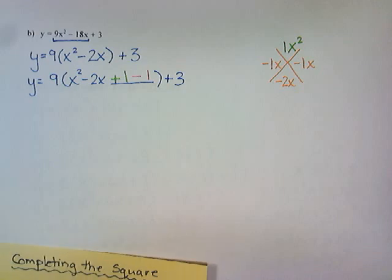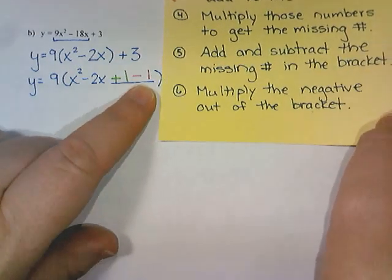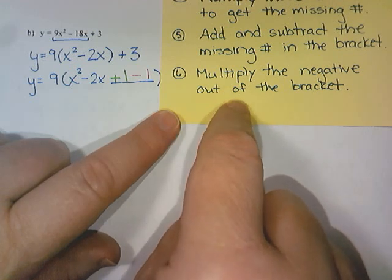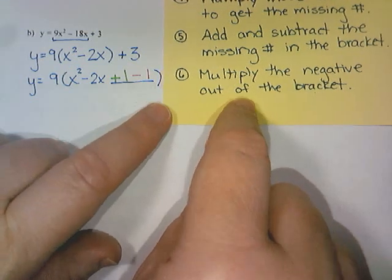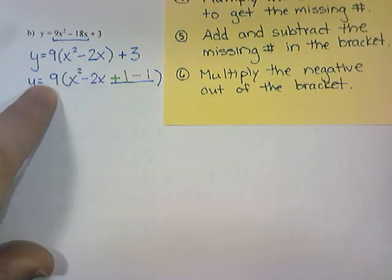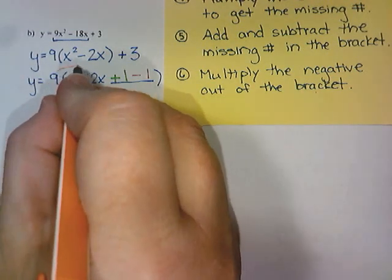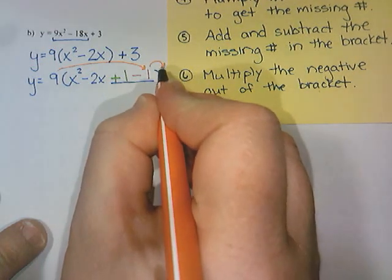However, that negative is not really part of the bracket that I'm looking for. So we are going to multiply the negative out of the bracket. The reason it's in the bracket is to show that it's being multiplied by 9. So if I multiply it by 9, it doesn't need to be in the bracket anymore.